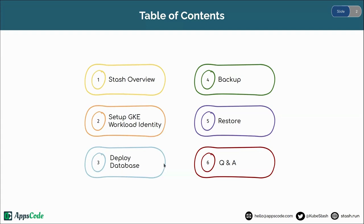Let's see the contents of today's webinar. First we will see a brief introduction about Stash, then we will see how to set up GKE Workload Identity, then we will deploy a database and insert some data into it. After that we are going to take a backup of that inserted data, then we will simulate a disaster scenario, and then we are going to restore our backed-up data to the database. In the final part there will be a question and answer session.